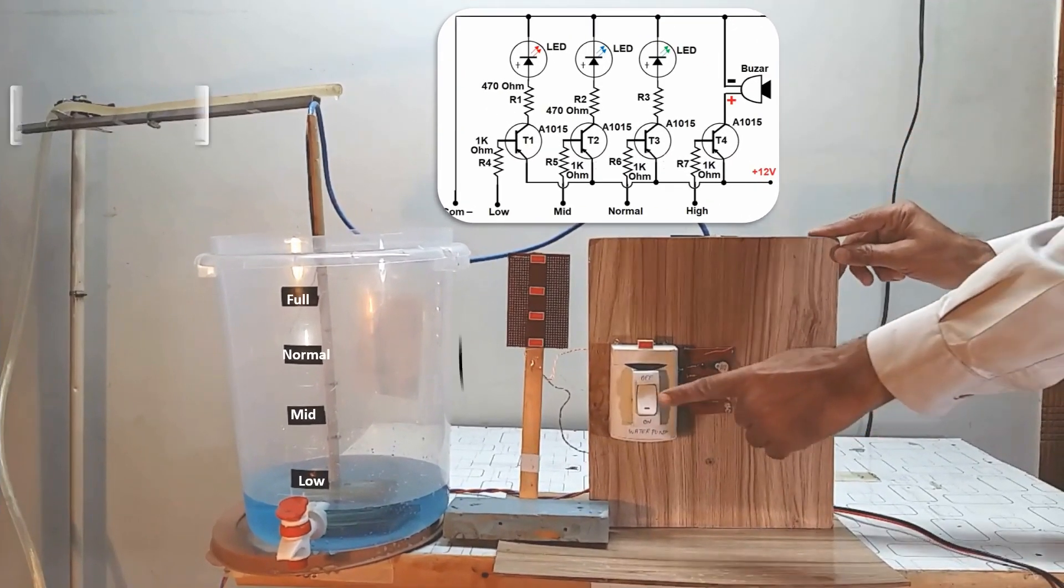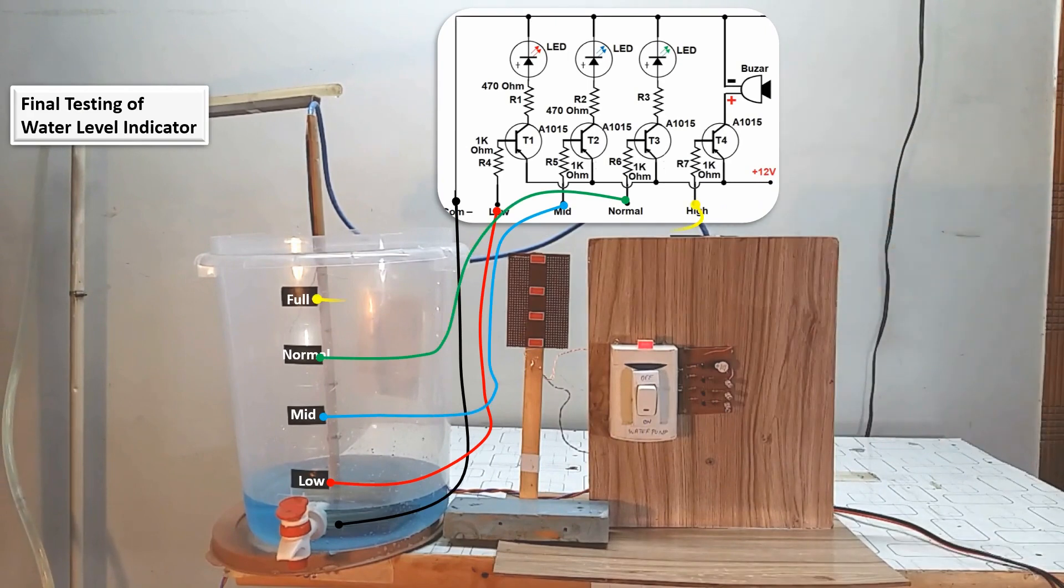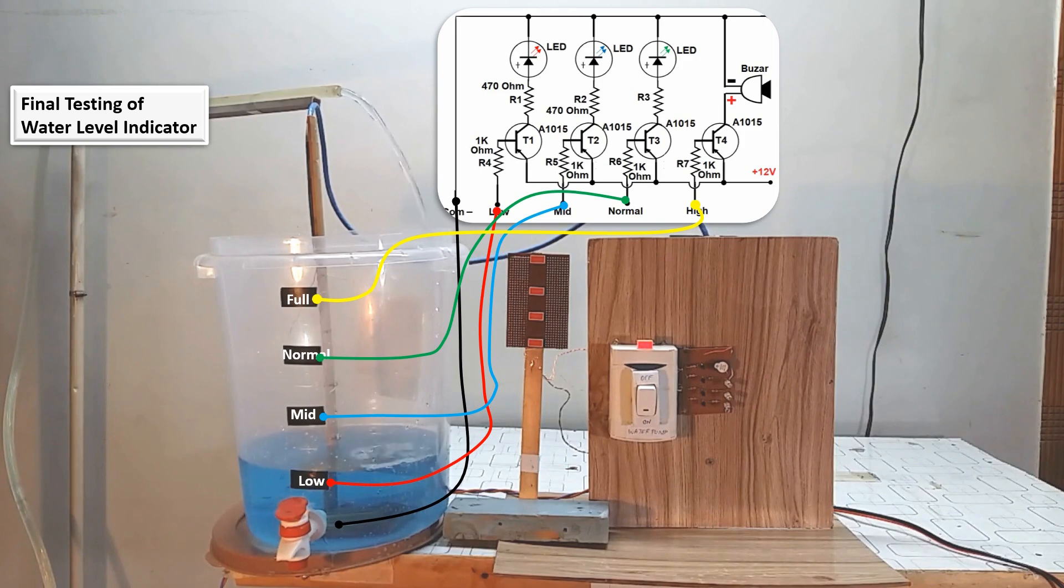When ProB1 comes into contact with water, it triggers transistor to turn on. This activation causes LED1 to illuminate, indicating that the water level is present at the low level.